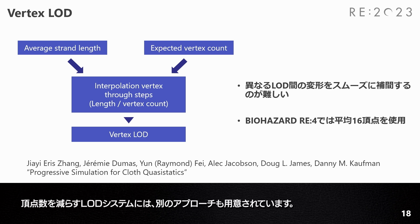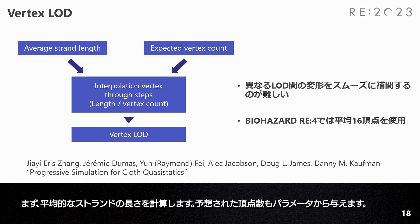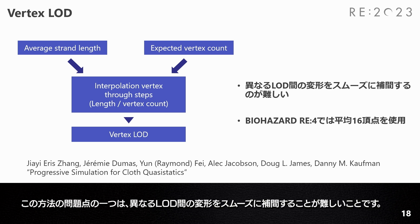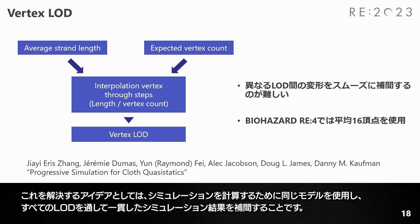Another approach is provided for the LOD system to reduce the vertex count. First, the average strand length is calculated. An expected vertex count is also given from parameters. After that, vertices are interpolated through the average length divided by the expected vertex count. One of the problems with this approach is that it is difficult to smoothly interpolate the deformation between different LODs. One idea is to use the same model to calculate the simulation and interpolate the consistent simulation result through all LODs.